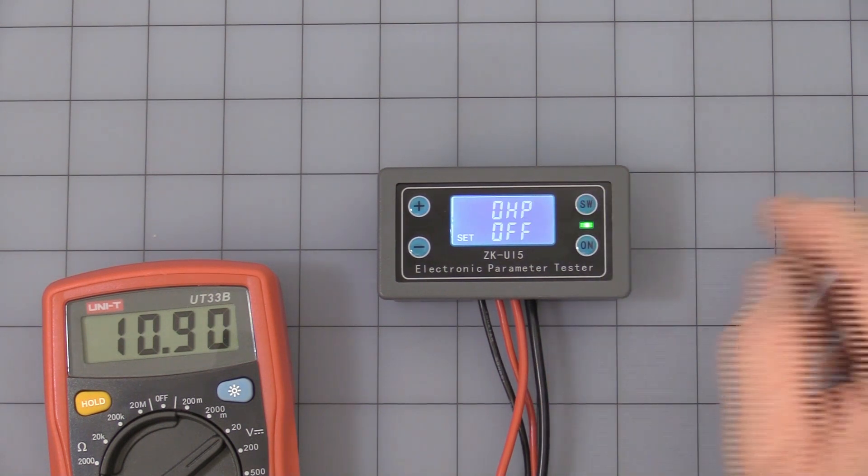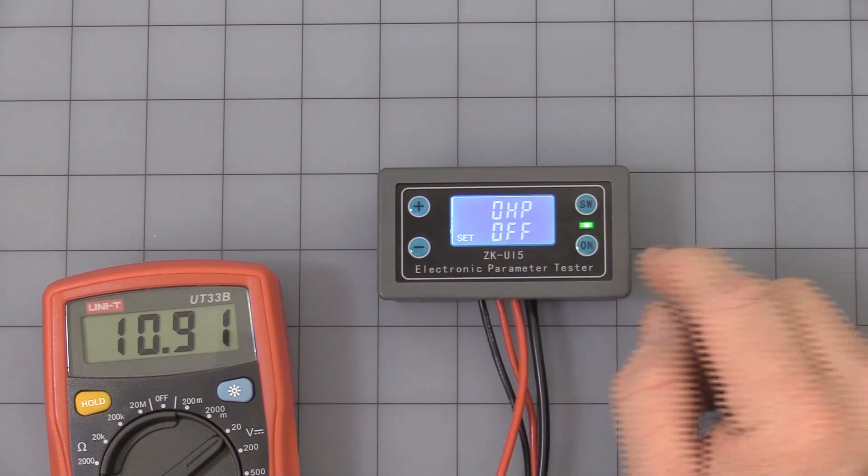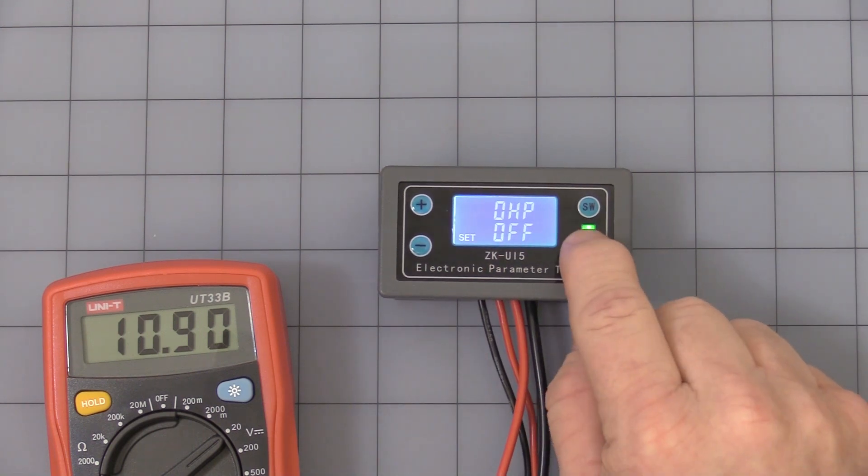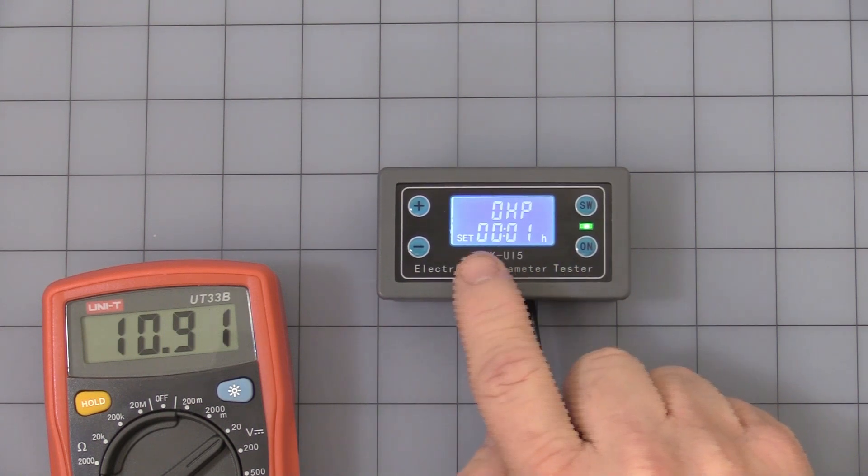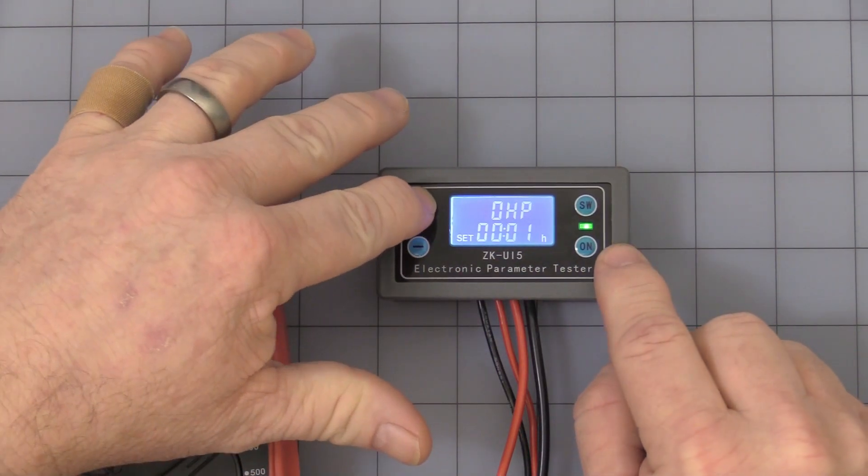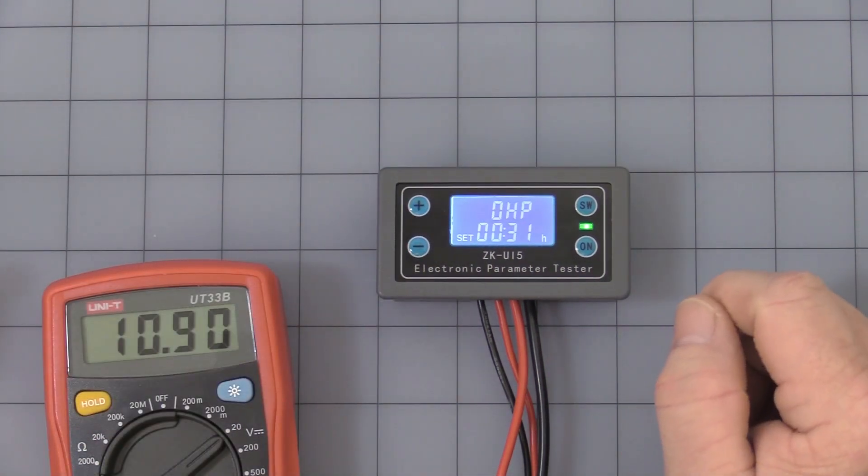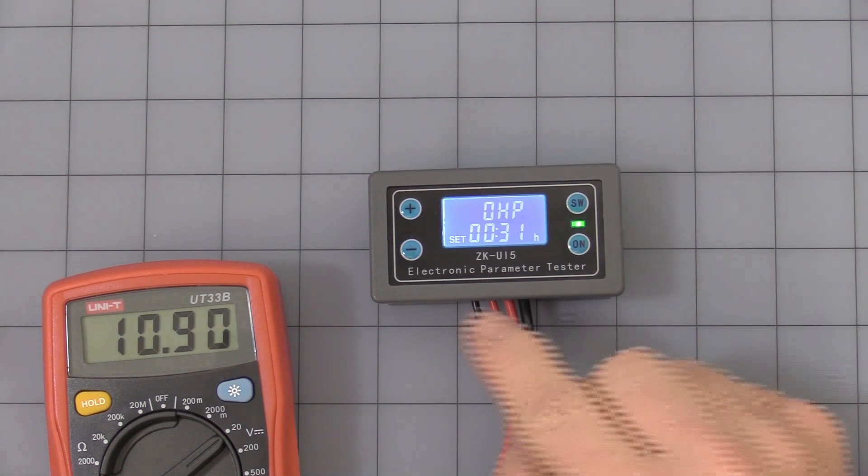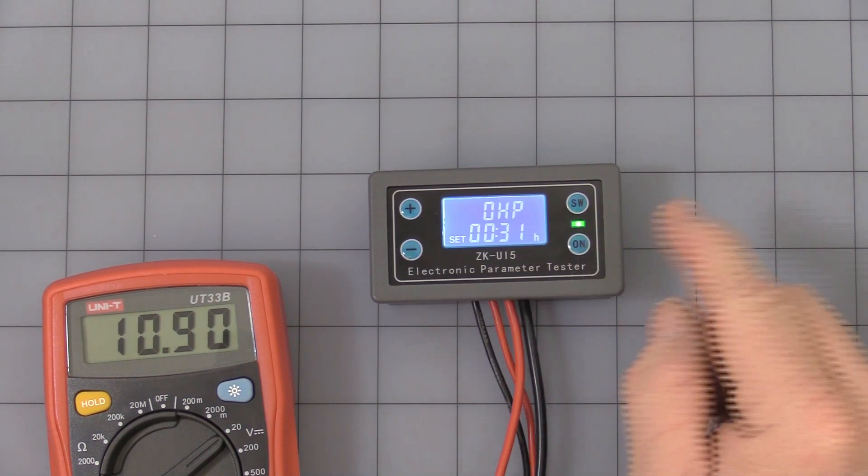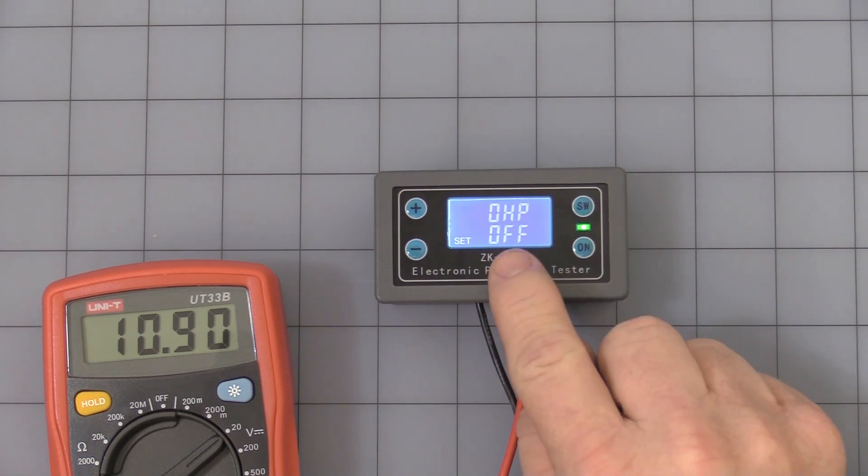Next, this comes factory set at off. This is a timer. If you press the on button once, it turns on. You see it has one minute resolution. Now this will limit how long your load is on your battery. This is set at 31 minutes. It has one minute resolution. If you don't want that, press the on button again and it turns it off.